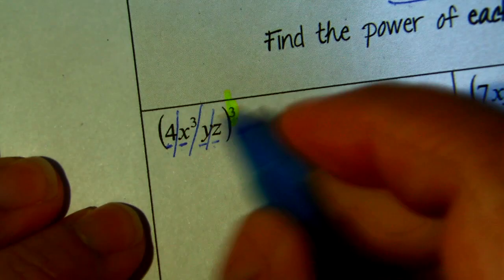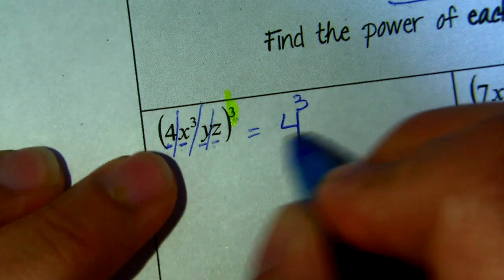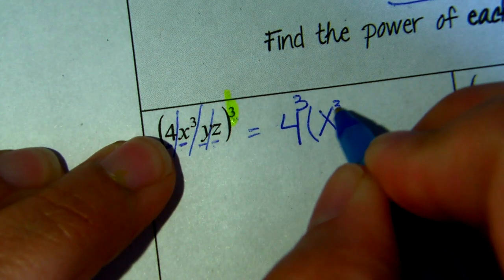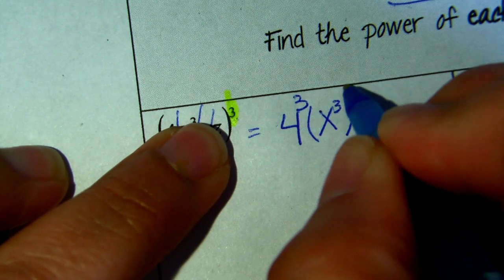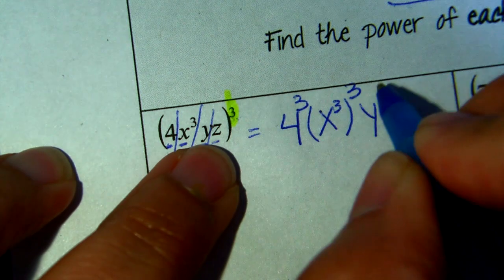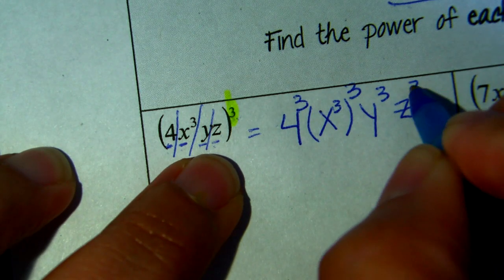So let's begin with the 4. 4 to the power of 3. Then, X cubic. So I'm going to put it in the parentheses because then it is also raised to the power of 3. Then, the Y also to the power of 3. And then, the Z raised to the power of 3.